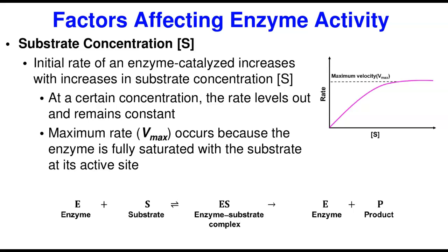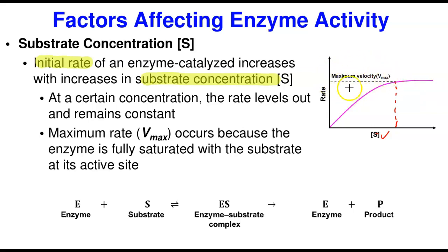Substrate concentration looks a little bit similar to enzyme concentration, but it's different because at a point, this rate levels out. The initial rate of an enzyme-catalyzed reaction increases with increase in substrate concentration. If you look at this graph — rate versus substrate concentration — initially, as you increase substrate, the rate increases just like before. But at a certain point, it begins to level off. You are still increasing the concentration, but there's no effect because the rate flattens — and this point where the rate does not change is what we call the maximum velocity or maximum rate.